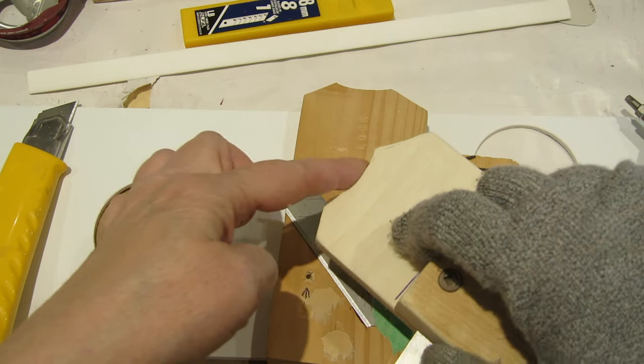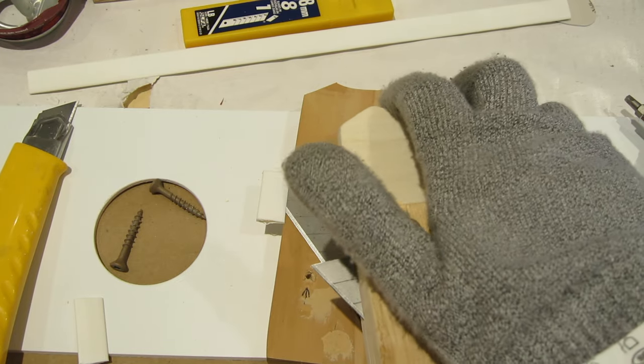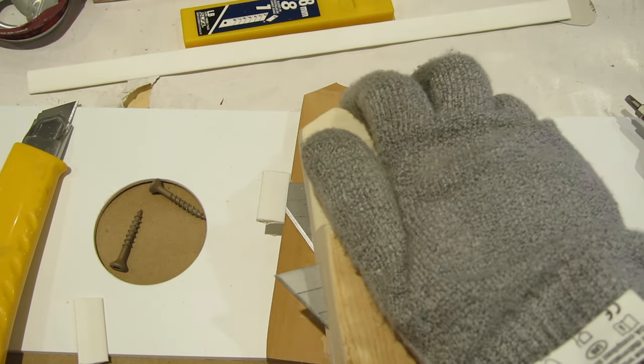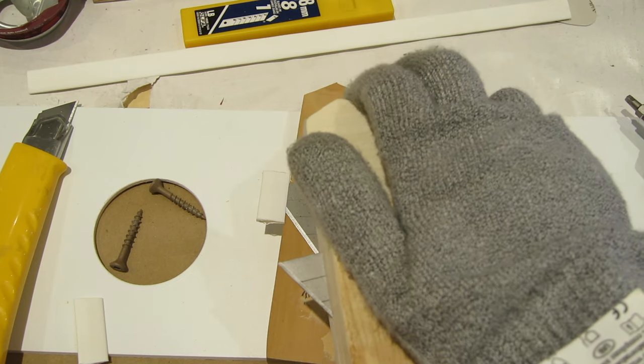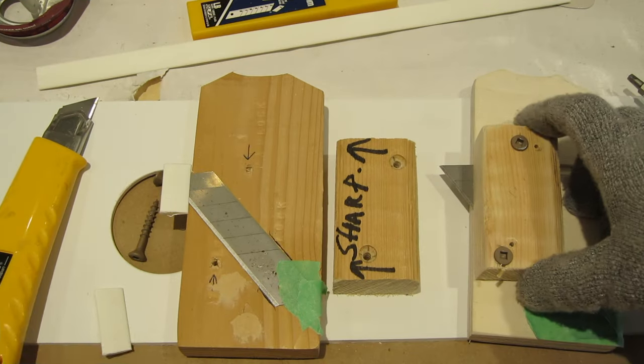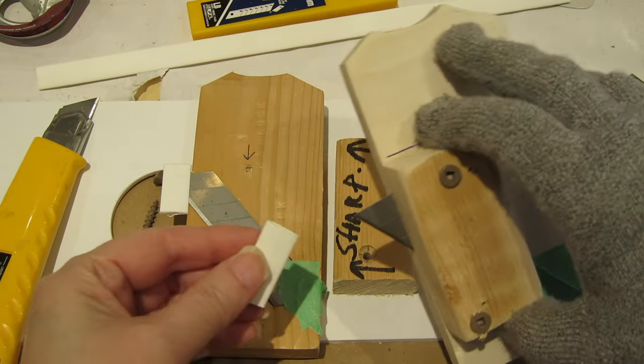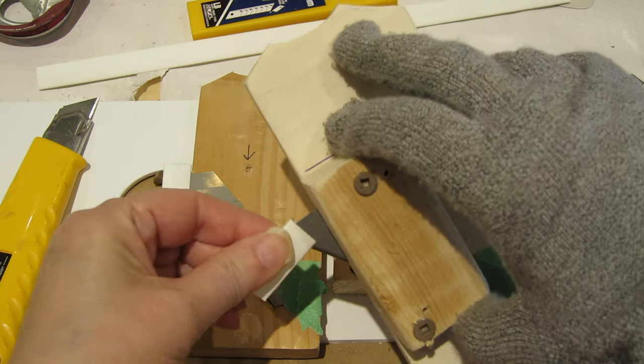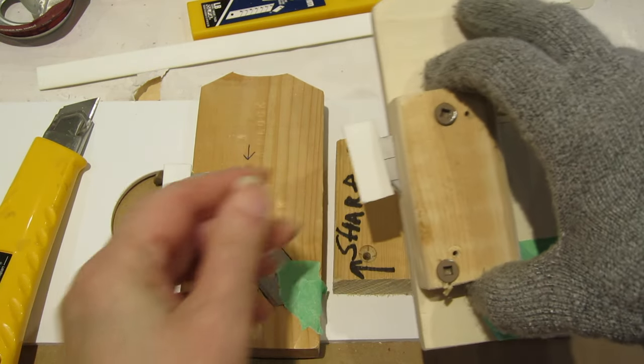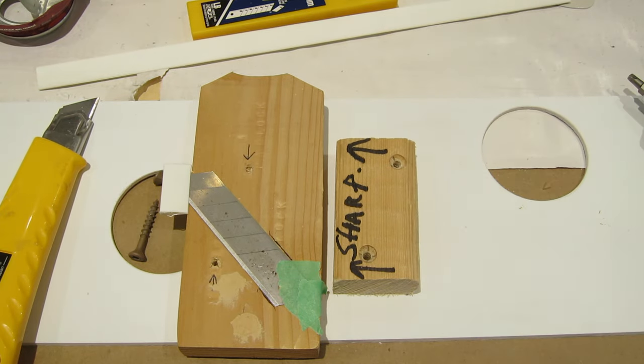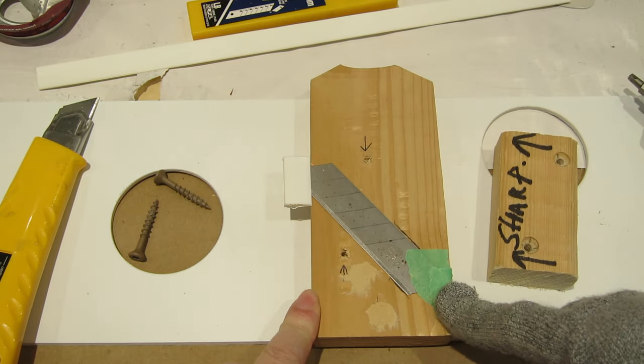The other thing we've done is we've got this sort of dig out here, and that's so that you can hold it when you come to cut the can. It makes it very easy to grip. So let's put this one aside. I'm going to put our blade cover on there.